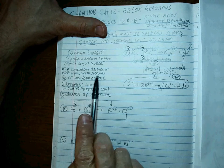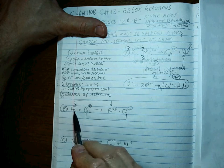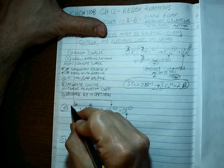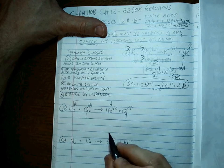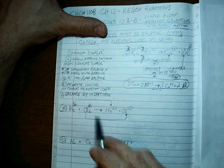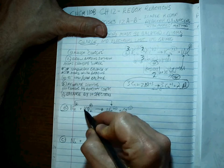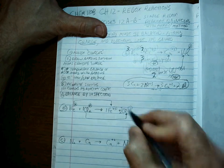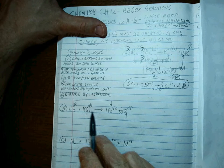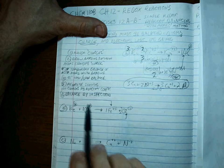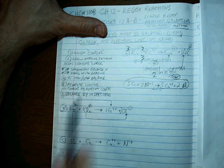Step three: temporary balance of atoms with arrows. There's one iron here and one iron here — a one-to-one ratio. But look at the chlorine: there are two chlorines in Cl₂ and two chloride ions on the product side. If there's one Cl₂, there are two chlorines. So two chlorines on this side and two chlorines on that side — that temporary balance becomes critical when we calculate electrons lost and gained.